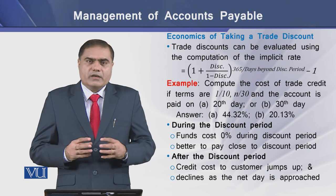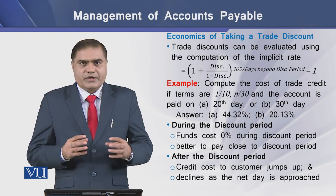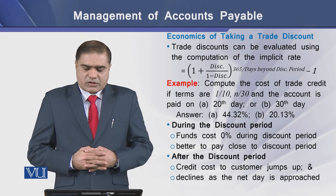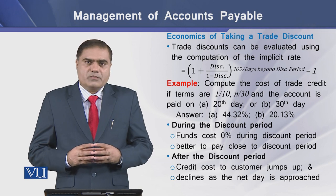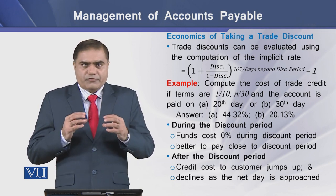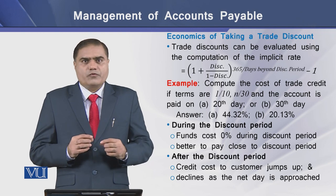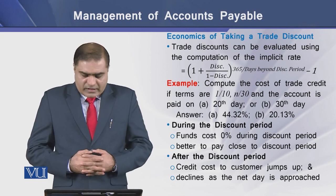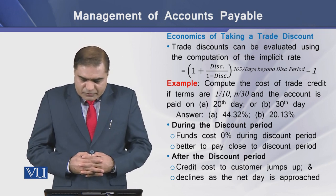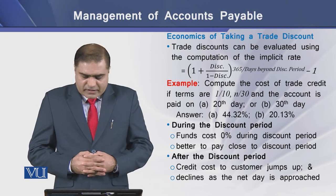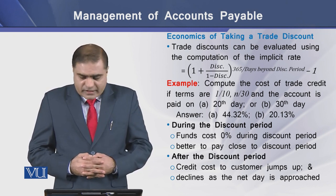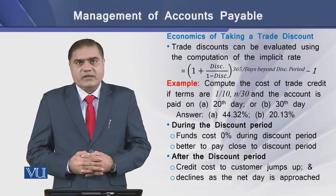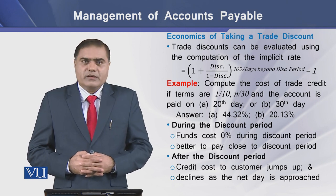How can we determine the economics of taking a trade discount offered by the vendor? A trade discount can be evaluated using the computation of the implicit rate, which is viewed as the cost of foregoing the discount offered by the vendor. For example, compute the cost of credit if terms are 1/10 net 30 and the account is paid on option A at the 20th day or option B at the 30th day.